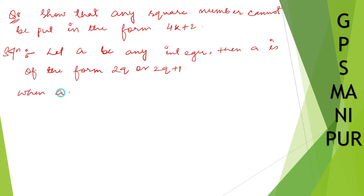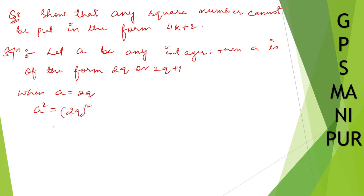When a is equal to 2q, a squared is equal to (2q) whole squared, which gives 4q squared — which is not in that form.